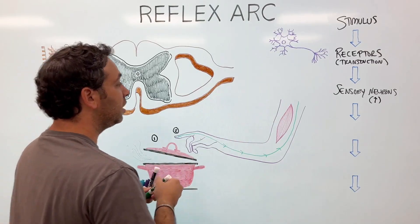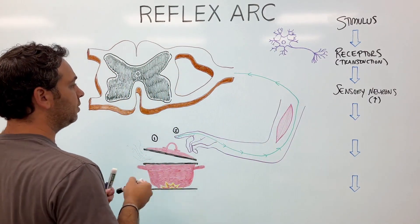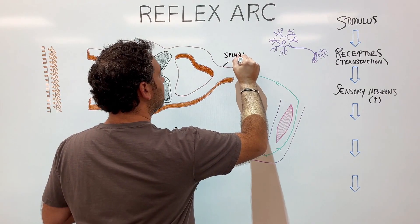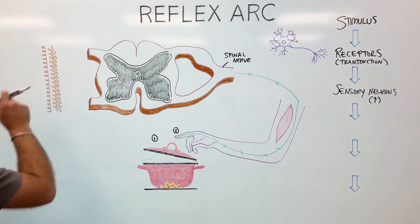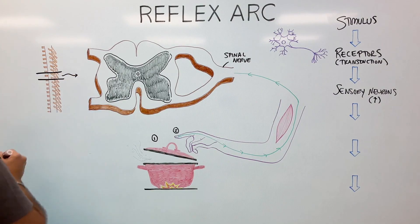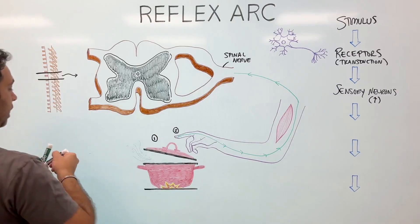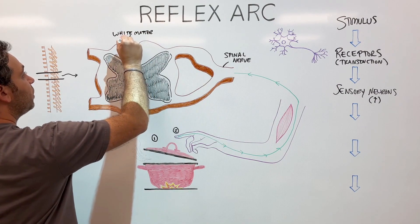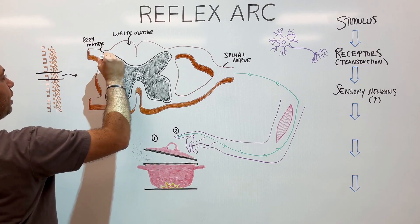Once they reach their destination — in this case, the spinal cord — they're going to enter what is called a spinal nerve. What we're looking at here is a cross-section of the spinal cord. Something to notice is that we have two different colors: white matter on the outside of our spinal cord, and gray matter on the inside.